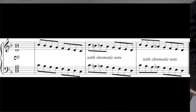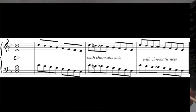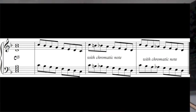If you add a chromatic passing note, it should be one that doesn't change the function of the dominant chord. For instance, between the octave and the dominant 7, you can play a chromatic passing note.